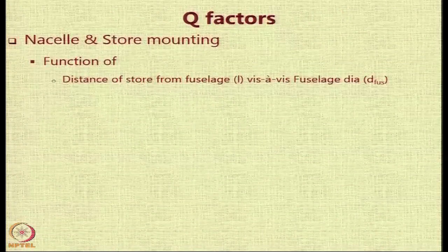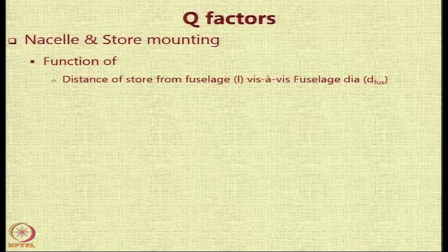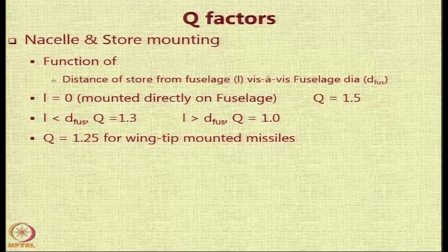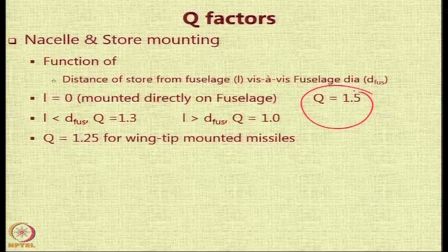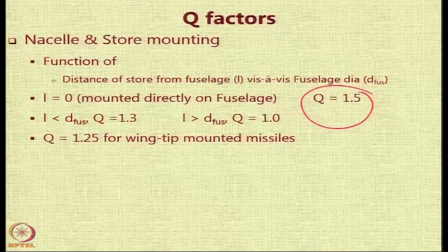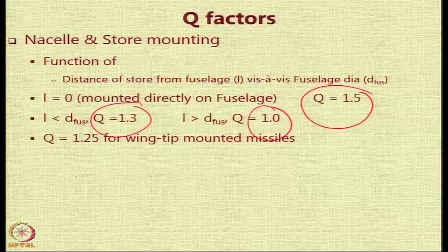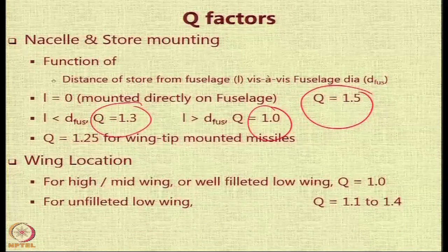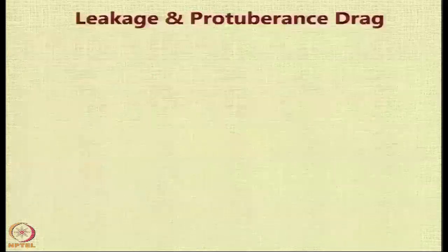For nacelle and store mounting, the Q factor depends on the distance from the fuselage relative to its diameter. If mounted directly on the fuselage, Q is very high — a 50 percent drag increase due to interference. Within one fuselage diameter, Q equals 1.3 (30 percent higher). At a distance equal to the fuselage diameter, Q equals 1.0, meaning practically no interference. For nacelle and tip-mounted missiles, Q equals 1.25. For high, mid, or well-filleted low wings, interference is negligible; for an unfilleted low wing, Q ranges from 1.1 to 1.4.